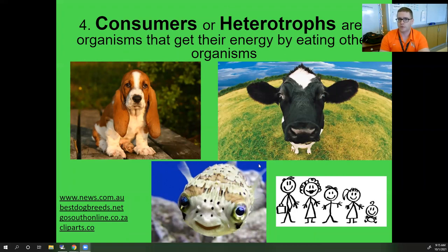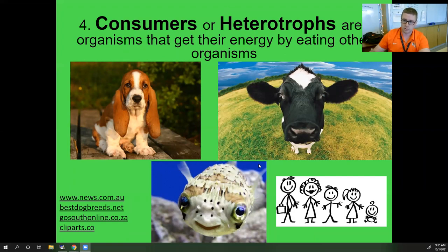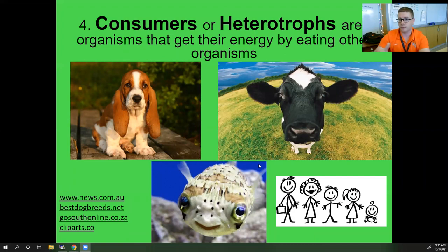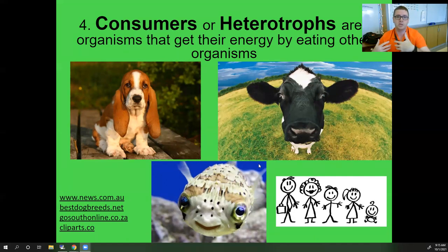Consumers are called heterotrophs. Similar to autotroph, 'trophic' means energy, but heterotroph means the organism gets energy from more than one source. The stick figure family, for example, might eat different types of animals and different types of plants — they are getting their energy through consumption from multiple different sources.